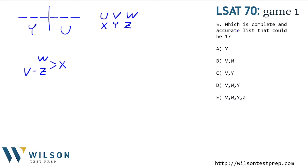Number five asks: which is a complete and accurate list of bands that could be first? A complete list has everything that could be first, and an accurate list doesn't contain anything that could not be first. Let's start by thinking about things that could not be first and eliminating those. Z and X have V before them, so Z and X can never be first. U is in spots four, five, and six, so it can't be first. Our only possibilities are V, W, and Y. On the previous problem we had V and Y both as possible for being first, so we know those can be first.